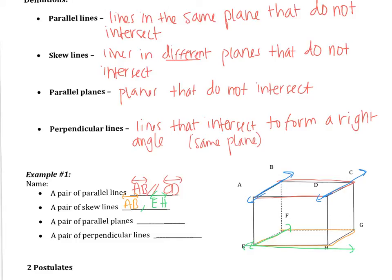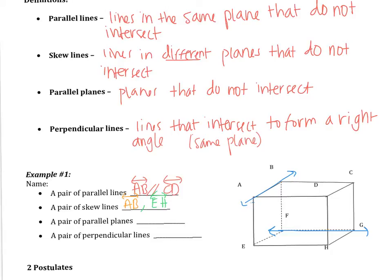Another example: a lot of students say that AB is skew to GH, but that is not true. Looking at the figure, you need to think — could I draw some plane between those two lines? Yes, you could put a plane on a slant that would go through both lines, so those lines are actually in the same plane — they're coplanar. So AB and GH would be parallel, not skew. If we're looking at AB, another line skew to AB would be FG. Those are going to be skew: there's no way to draw a plane between the two, and they don't intersect.